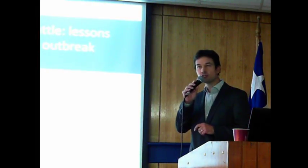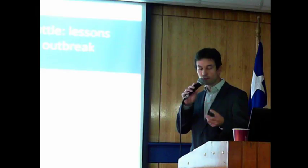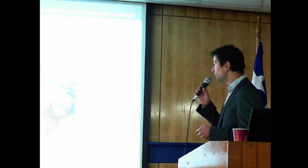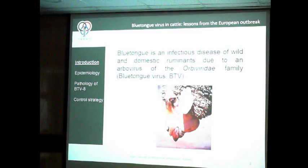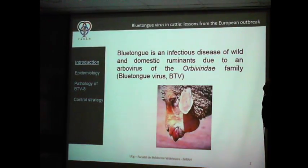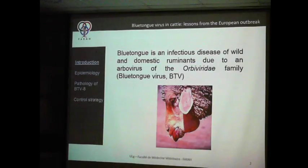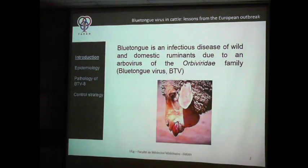You probably all know about this disease. Blue Tongue is an infectious disease of ruminants due to an arbovirus, also transmitted by arthropods — mostly Culicoides but also some mosquito species of the Orbivirus family, which is called Blue Tongue Virus (BTV). You can see why we call it Blue Tongue, because the tongue of these animals can be blue due to cyanosis.